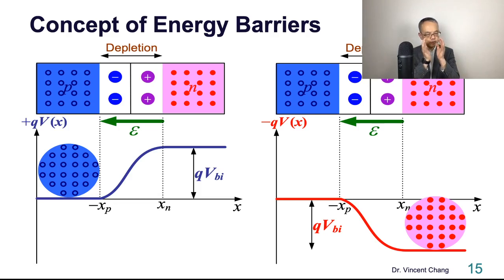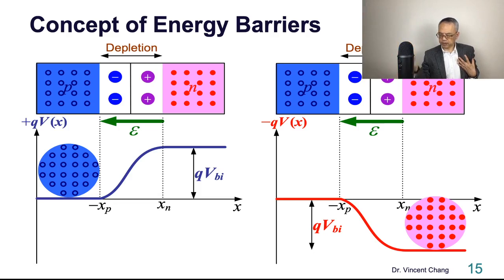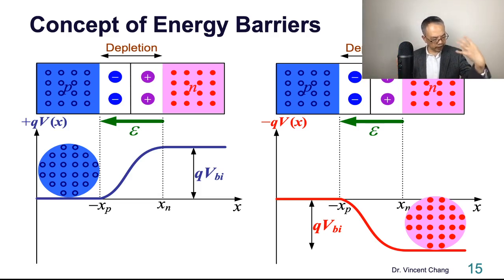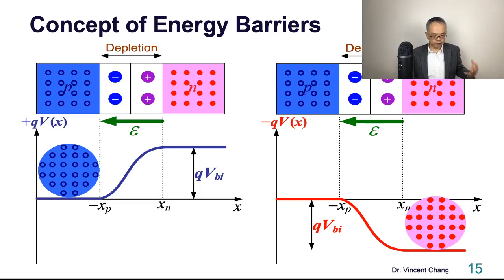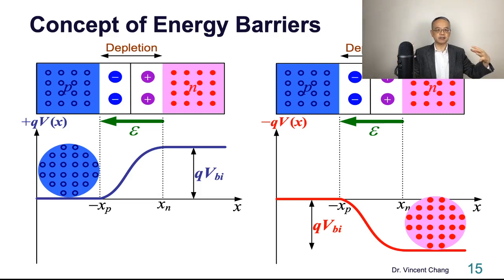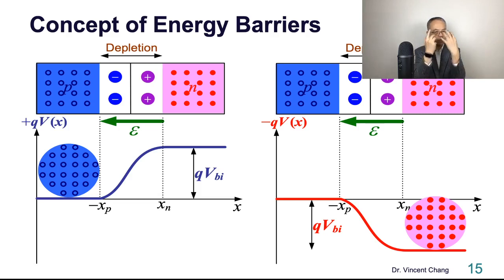In thermal equilibrium for a PN junction, both carrier majorities are abundant: holes are the majority for P-type and electrons for N-type. Both abundant groups live in the low-energy region, and at the facing interface they see the same potential barrier that blocks them. That is the thermal equilibrium condition for a PN junction.